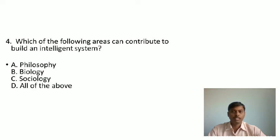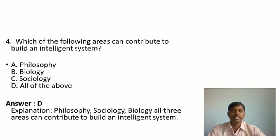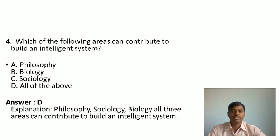Fourth MCQ: Which of the following areas can contribute to building an intelligent system? A. Philosophy. B. Biology. C. Sociology. D. All of the above. Answer is D — philosophy, sociology, and biology, all three areas can contribute to building an intelligent system.